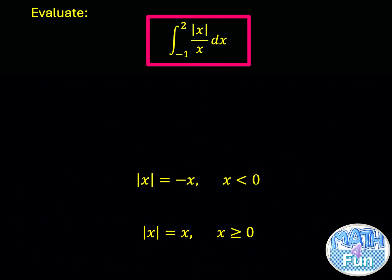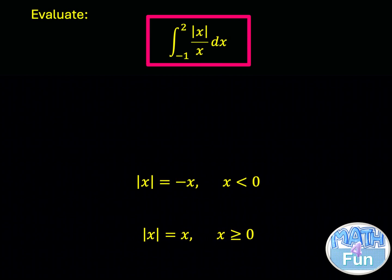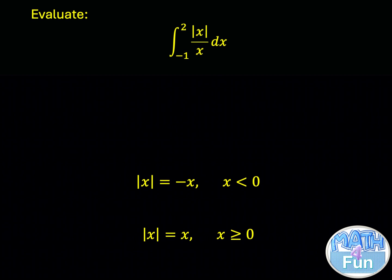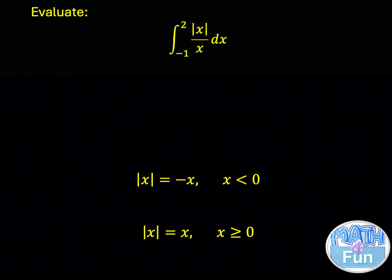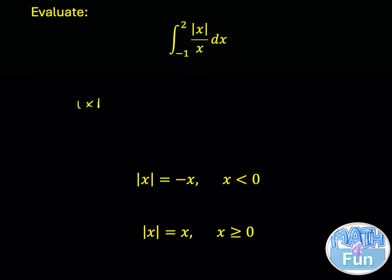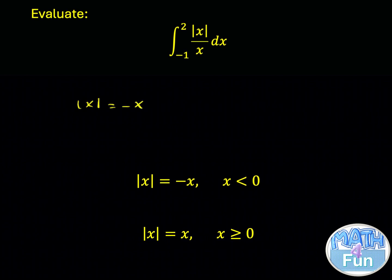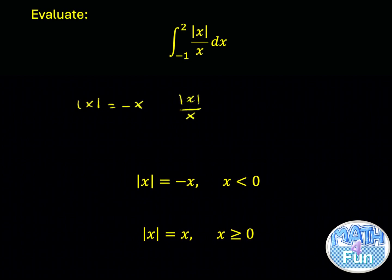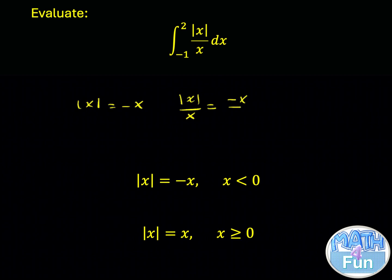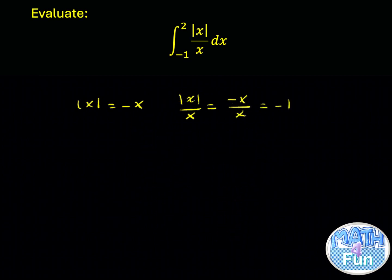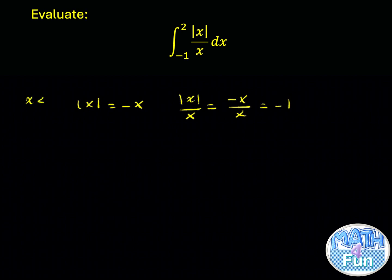The integration is from minus 1 to 2, so it's passing through 0. For the part where x is smaller than 0, the absolute value of x is going to be equal to minus x, which means absolute x over x equals minus x over x, which equals minus 1.